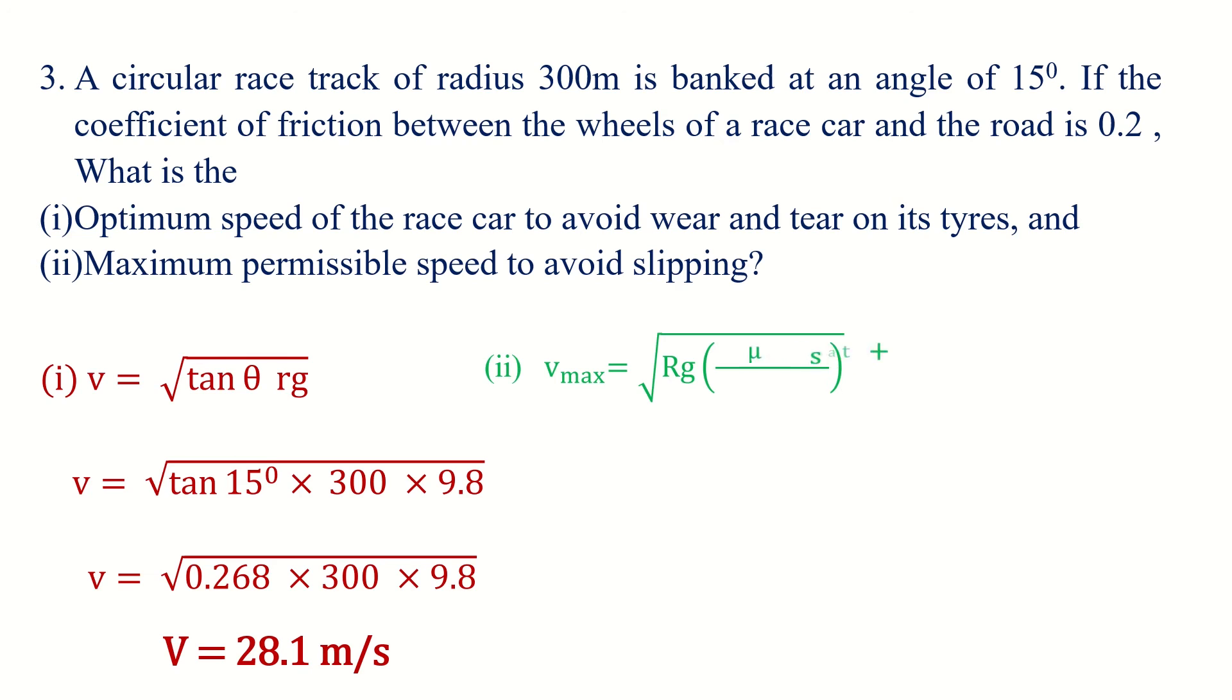So the equation becomes Vmax equals root Rg times (mu s plus tan theta) divided by (1 minus mu s tan theta). The answer becomes 38.1 meters per second.